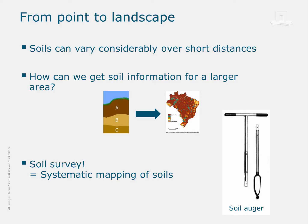Soil survey is a systematic mapping of soils to classify soil types and properties over larger areas. It involves a combination of soil profiles and soil augering to identify various soil units in an area, and mark the boundaries between them.